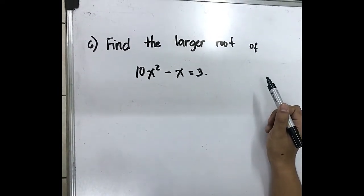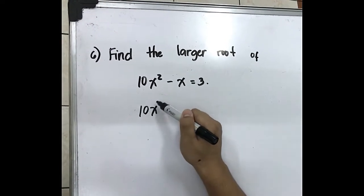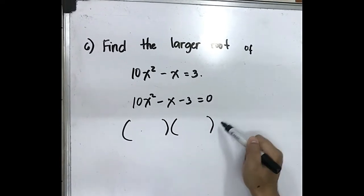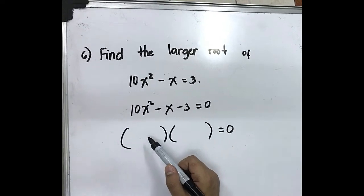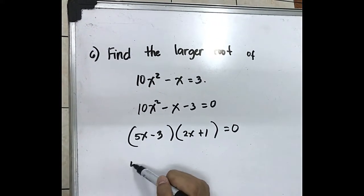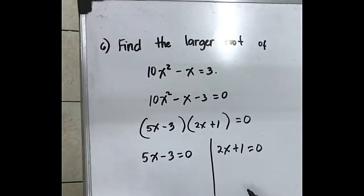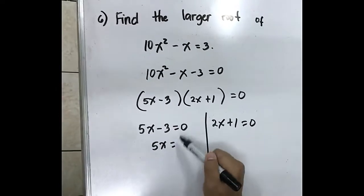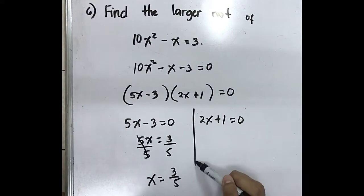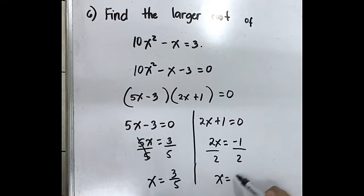Number 6: Find the larger root of 10x squared minus x equals 3. Rewrite in standard form: 10x squared minus x minus 3 equals 0. Factor: 5x minus 3 and 2x plus 1. Equate each to 0. From 5x minus 3 equals 0: x equals 3 over 5. From 2x plus 1 equals 0: x equals negative 1 half.